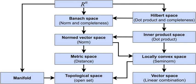Topological notions—continuity, convergence, open sets, closed sets, etc.—are defined naturally in every Euclidean space. In other words, every Euclidean space is also a topological space. Every isomorphism between two Euclidean spaces is also an isomorphism between the corresponding topological spaces. But the converse is wrong; a homeomorphism may distort distances.